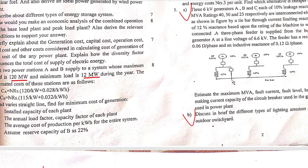The estimated cost of station A is given as NRS 120 per kilowatt plus 0.028 per kilowatt hour. Similarly for station B the estimated cost is NRS 115 per kilowatt plus 0.032 per kilowatt hour. If the load varies as a straight line, find the minimum cost of generation.